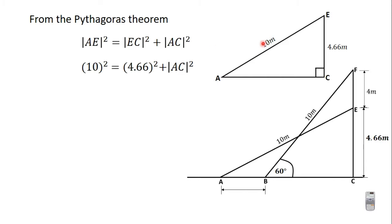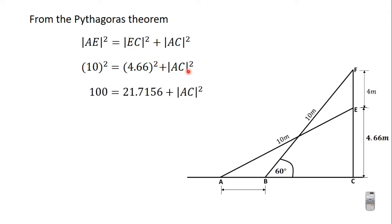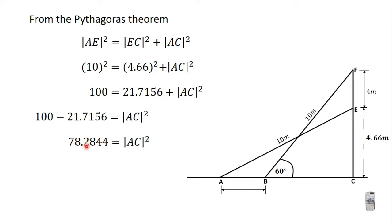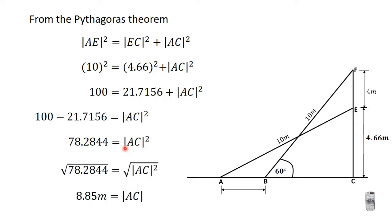AE is 10 meters, so 10² = 4.66² + AC². Simplifying, we get 78.2844 = AC². Taking the square root of both sides gives AC = 8.85 meters, corrected to three significant figures. So we now have AC. Let's go ahead and find BC.